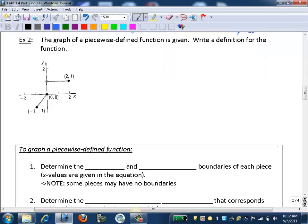Here we're given the graph of a piecewise defined function. We want to now write a definition for this function from the graph. So when we're writing the definition, we have to come up with two things.